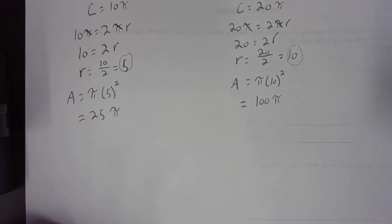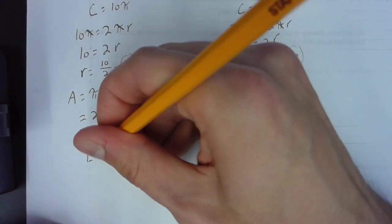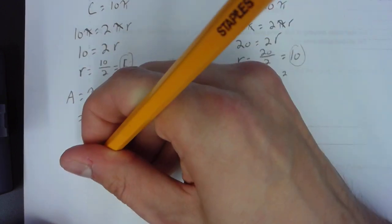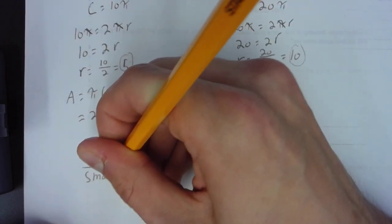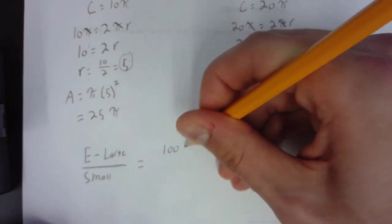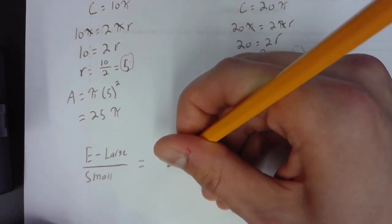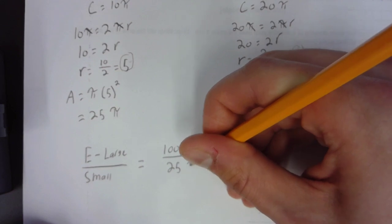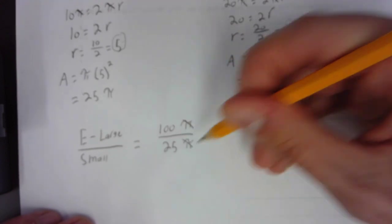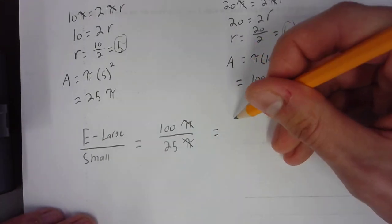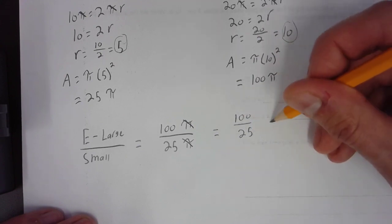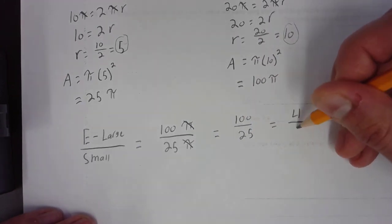Now, we're not done yet. Now, we have to compare both sizes. We're going to find how many times larger the extra-large is over the small. So, that is going to be 100π over 25π. And as you can see here, the π's will cancel out. What we are left with is 100 over 25, which is 4 over 1.